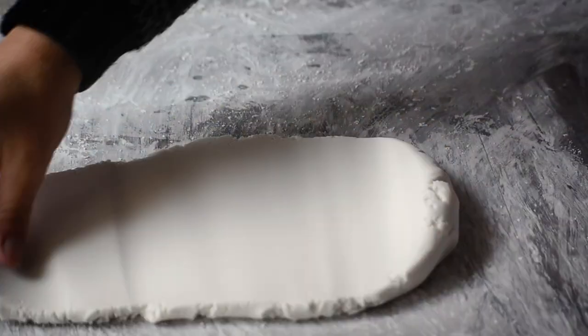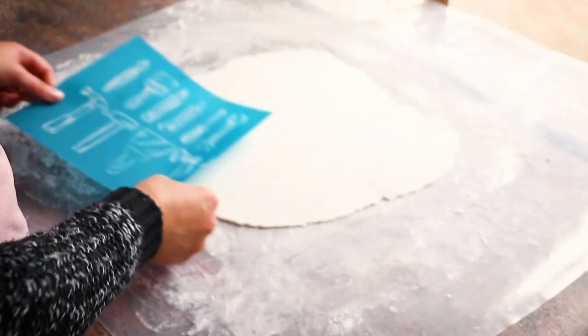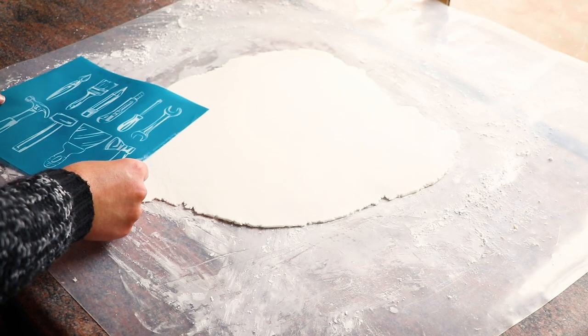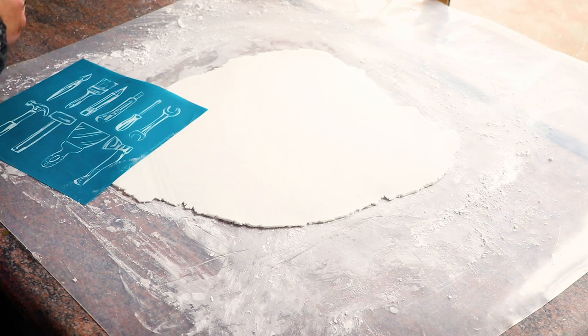I rolled out some white fondant and stenciled on the fondant with my mesh stencils and black royal icing. I used the same cutter as before to cut the fondant to size.